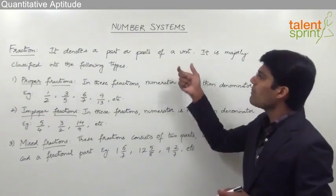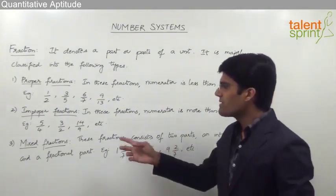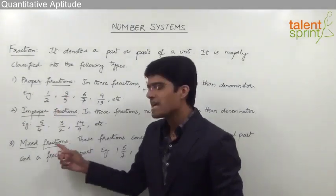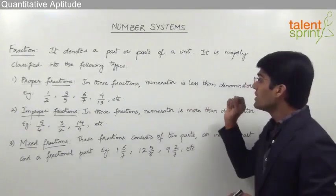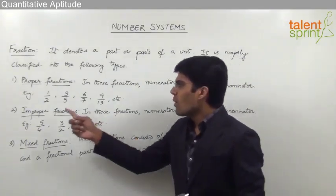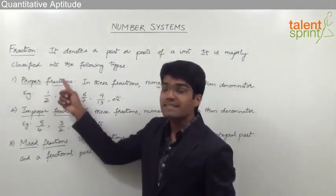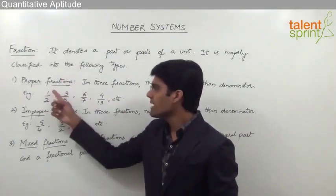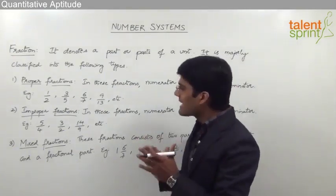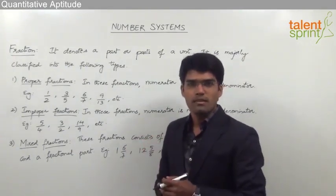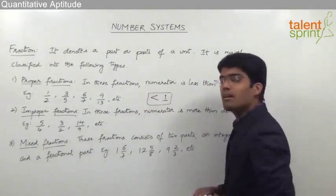A fraction denotes a part or parts of a unit. Fractions are majorly classified into three types: proper fractions, improper fractions, and mixed fractions. Proper fractions are fractions in which the numerator is less than the denominator. For example, 1/2, 3/5, 6/7, 9/13 and so on. In each of these fractions, the numerator A is less than the denominator B. Proper fractions are always less than 1 because they represent a part of 1 unit.